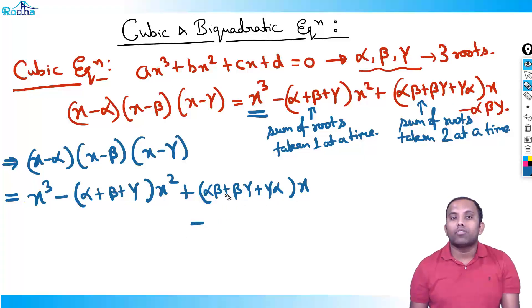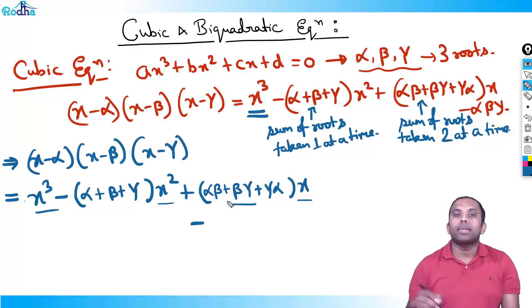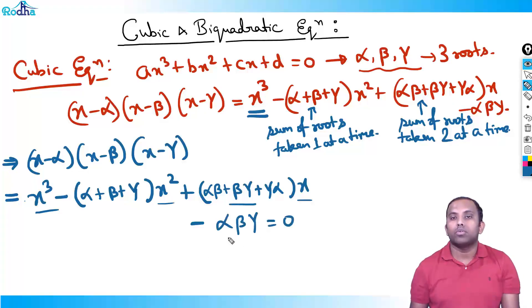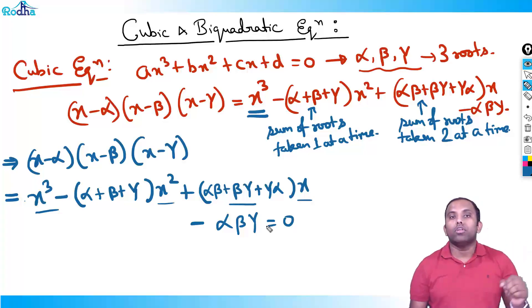After that plus sign comes a minus sign. The power of x reduces to x⁰, which is a constant term — no x here. Taking all three roots at a time gives one term: αβγ = 0. This completes the cubic expansion. If you understand this pattern, you can do bi-quadratic (power 4) equations as well.